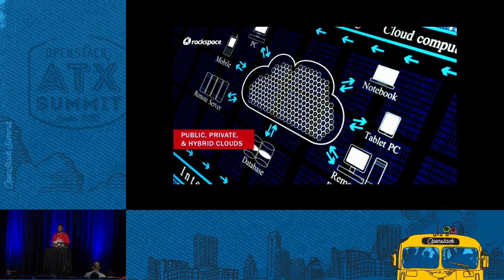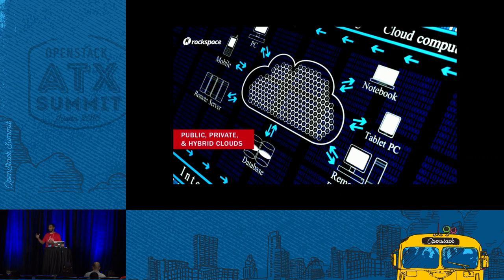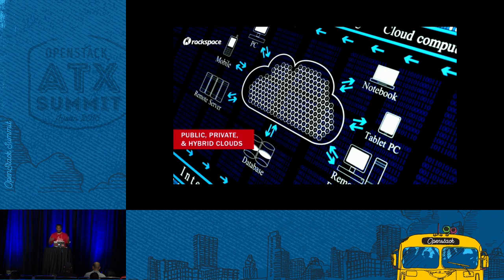Managed private clouds are one specific form of cloud computing where the cloud is specific to an individual business but receives assistance like operating system service, monitoring, and patching from a third-party managed provider. Hybrid cloud is a mix of the two — at Rackspace we do private clouds in your data center, a third-party data center, or ours. You can have a private cloud plus a public cloud with another service provider and mix and match services between those.